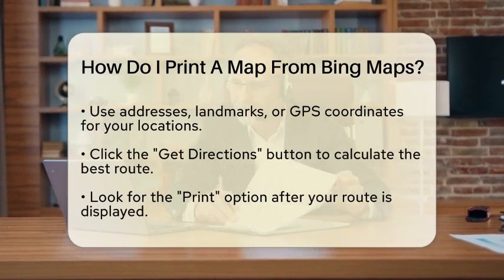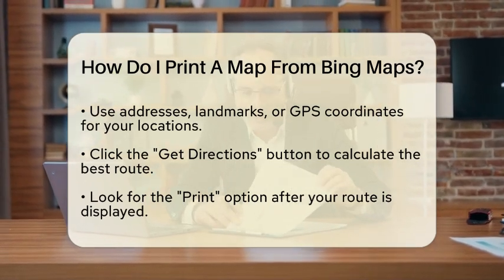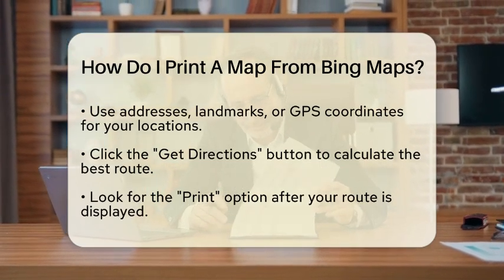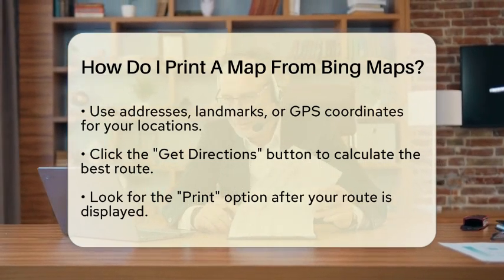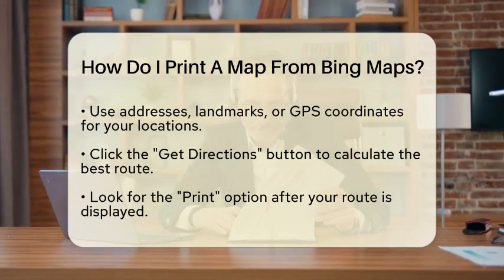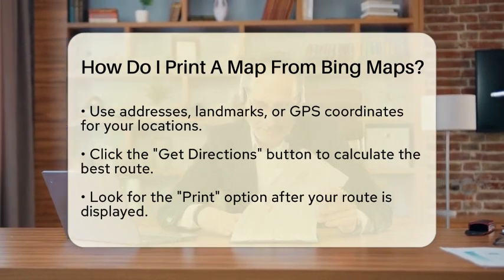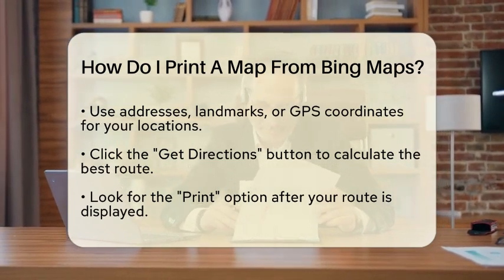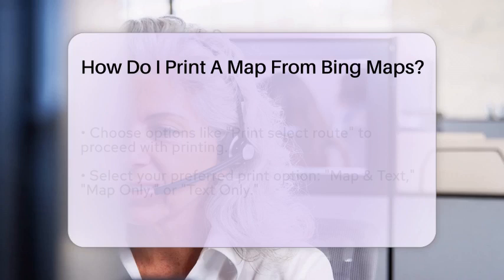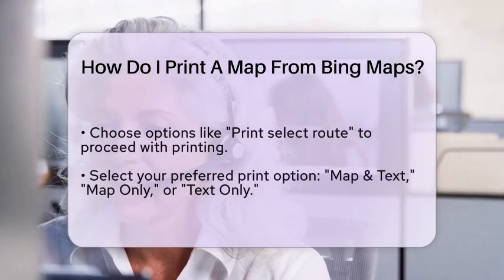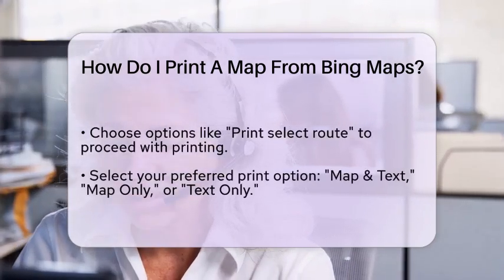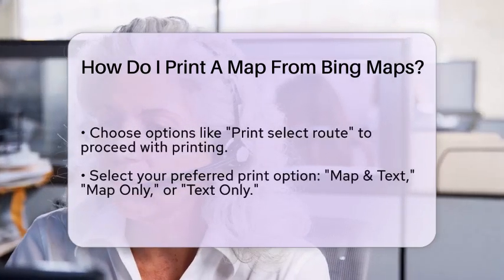Click on that option to proceed. When you click the Print option, you will typically be presented with choices such as map and text, map only, or text only. Choose the option that best fits your needs. For example, if you only want the map without any accompanying text, select Map Only.